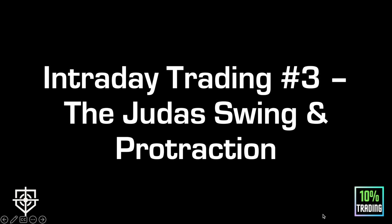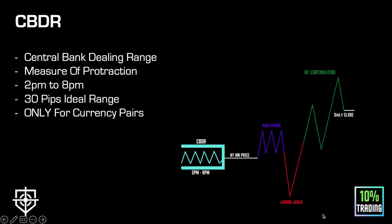There's a way to measure protraction — where the high or the low of the day could be put in. The Judas swing, as we know, during the London session typically puts in the high or the low of the day. The CBDR — the Central Bank Dealing Range, or Central Bank Dealers Range — is a way to measure this. It measures the protraction that occurs to form the high or the low of the day.